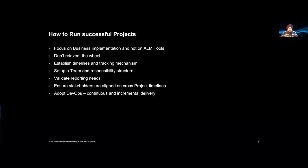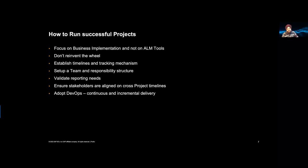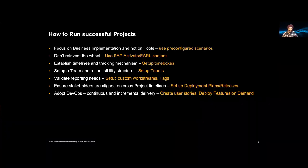There should be a very formal setup and responsibility structure so that everybody knows exactly what to do and when. Talk to management about reporting needs upfront and keep it transparent — as much as possible online, not offline. Get stakeholders' agreement on cross-project timelines, because project leads need to realize they contribute to a larger purpose with multiple parallel initiatives running simultaneously. And lastly, DevOps: ensuring one central, holistic view of the entire problem, not breaking it into silos, with continuous and incremental delivery.